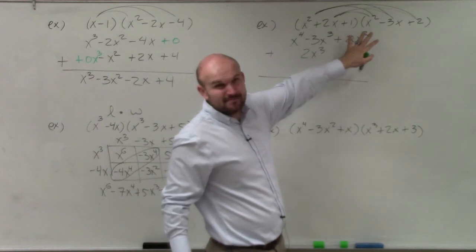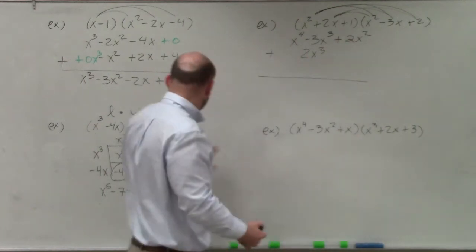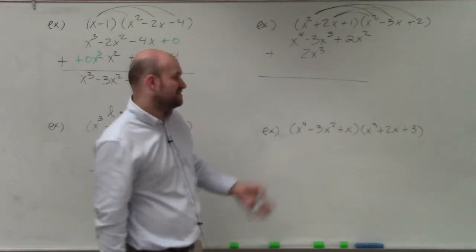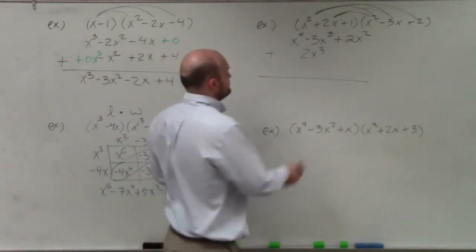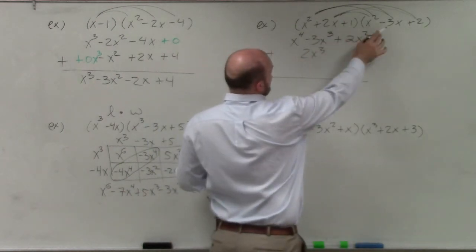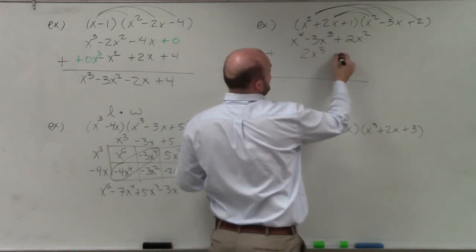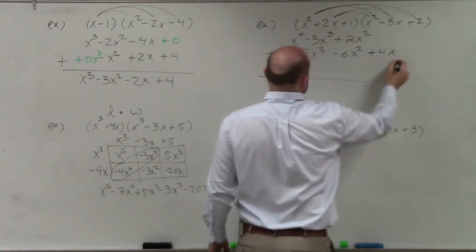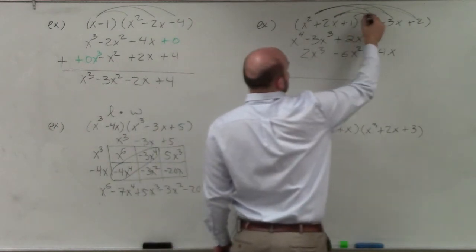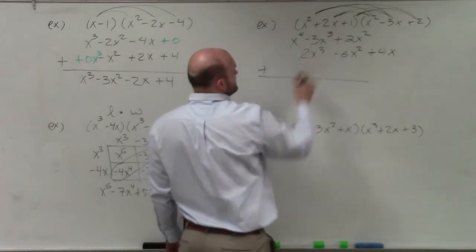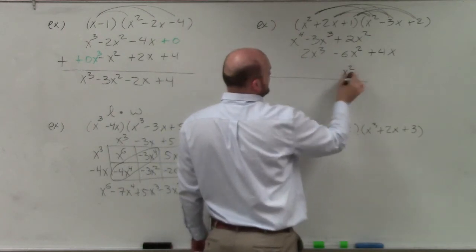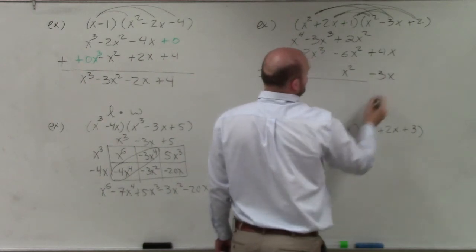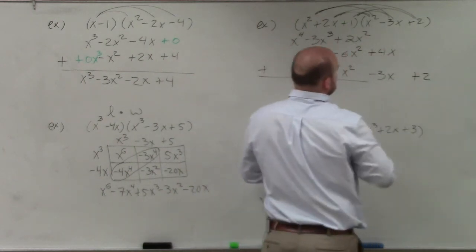Vertical alignment really helps when the terms are uniform — all having the same powers makes it a clean step-by-step process. So 2x times -3x is -6x², and 2x times 2 is +4x. Then for the last term: 1 times x² is +x² (aligned with the x² column), 1 times -3x is -3x, and 1 times 2 is +2.